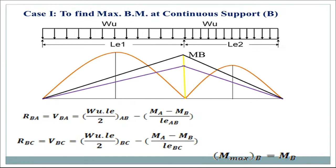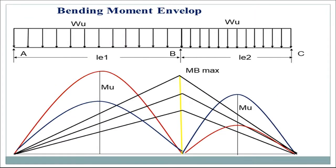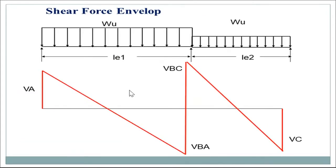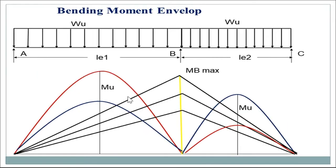From Case 3, we provide design load on adjacent spans to get the maximum design moment at continuous support B. Using this case we also get the maximum design shear force at support B toward A and B toward C. Using all three cases, we get the bending moment envelope — Case 1, Case 2, and Case 3 — giving maximum bending moment in spans AB and BC, and the moment at support B for all three cases.